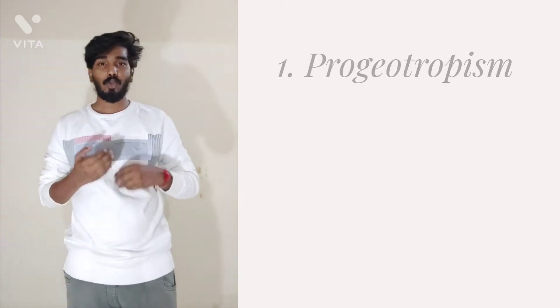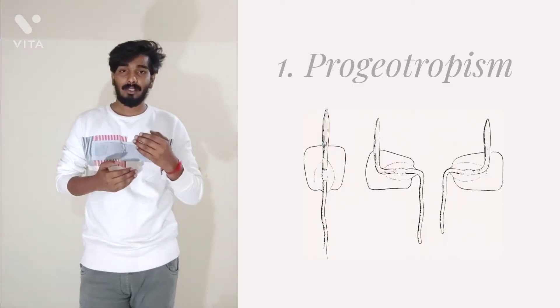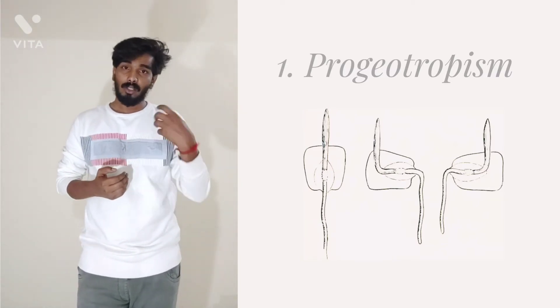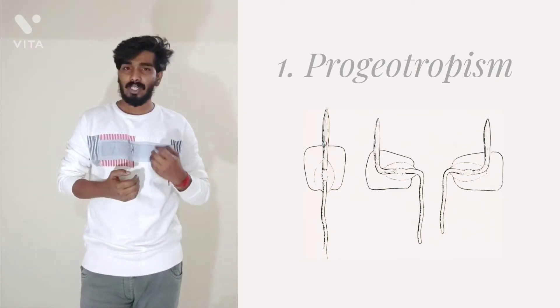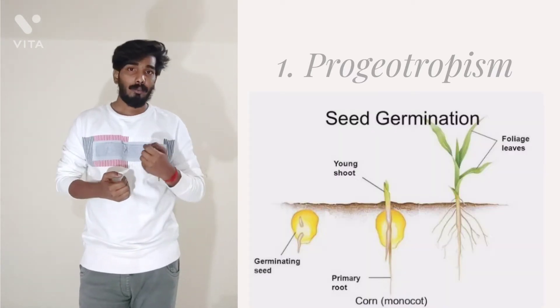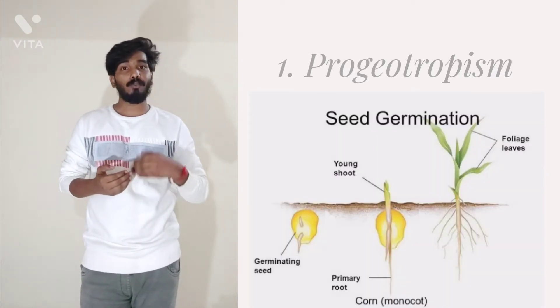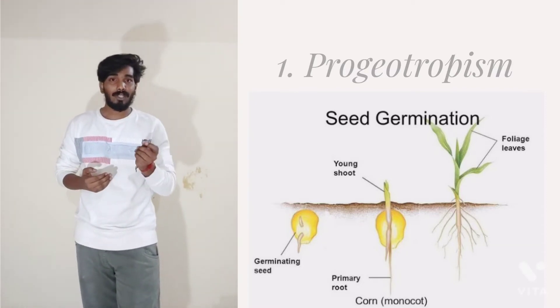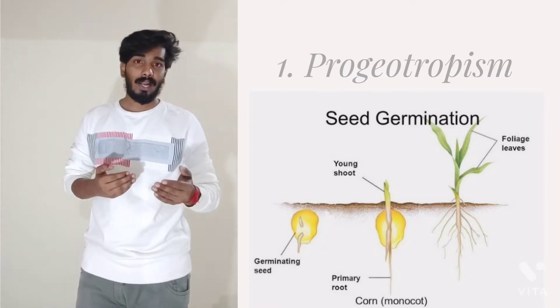Based on how the plant organs react to these external stimuli, geotropism can be classified into three types. Number one is progeotropism, where plant axes are directly pointed toward the center of the earth or toward the source of gravity. This is generally seen in primary roots. Primary roots are manifested to progeotropism. So progeotropism means the direct curvature of the plant axis toward the source of gravity.